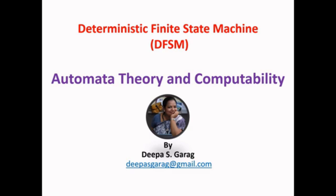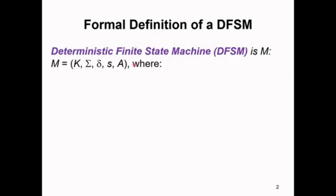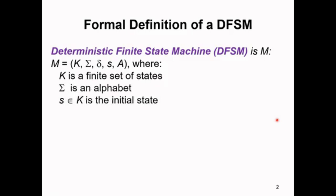Today we will be discussing about deterministic finite state machine. Deterministic finite state machine is defined as M equals K summation delta S A, where K is finite set of states, summation is an alphabet,